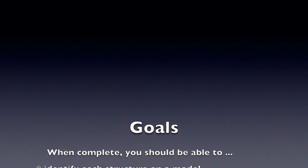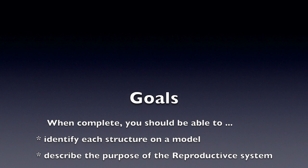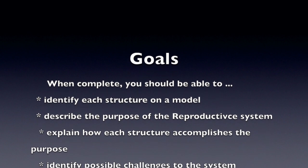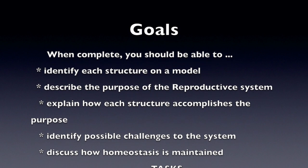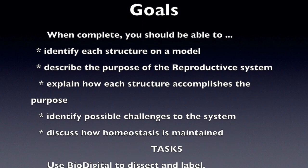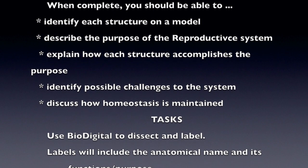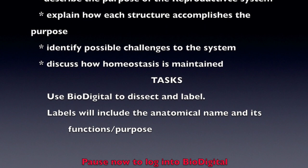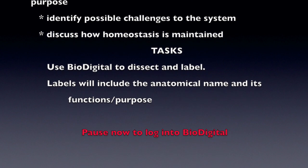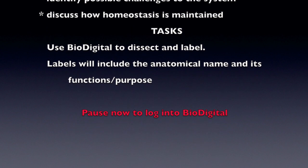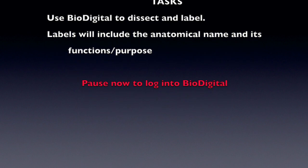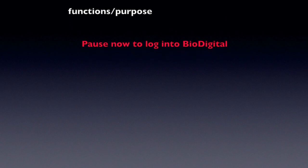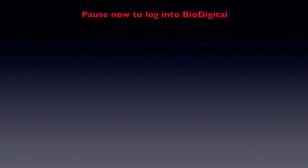Our goals: when we're complete you should be able to identify each structure on a model, describe the purpose of the reproductive system as a whole, explain how each structure accomplishes those purposes, identify any possible challenges to the system such as outside challenges, discuss how all of those structures are going to help to maintain homeostasis, and we're going to be utilizing Biodigital to dissect and label — our labels will include both the name as well as the function of the system.